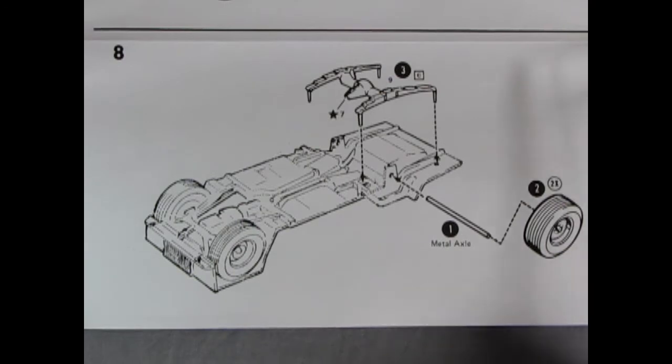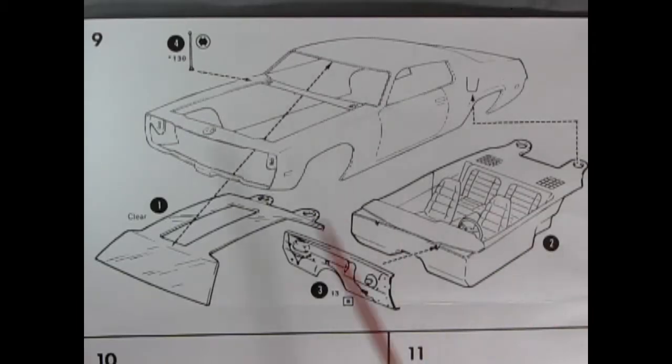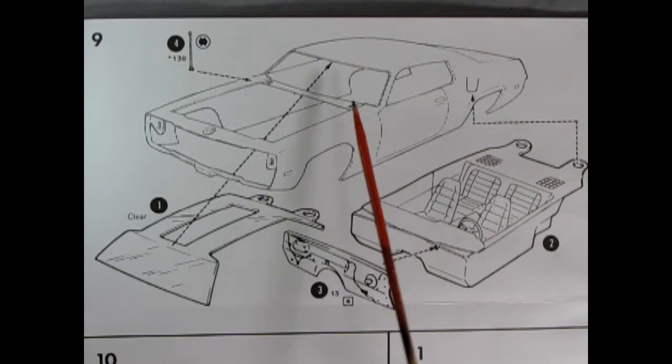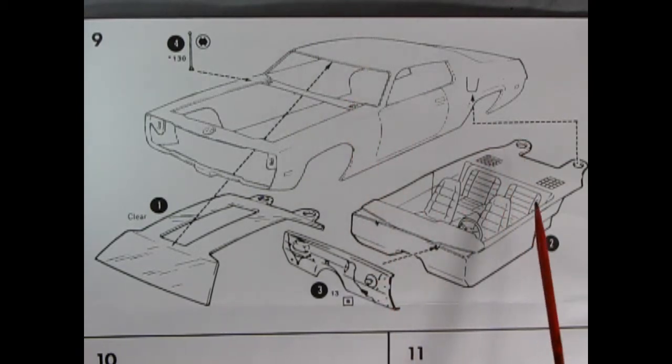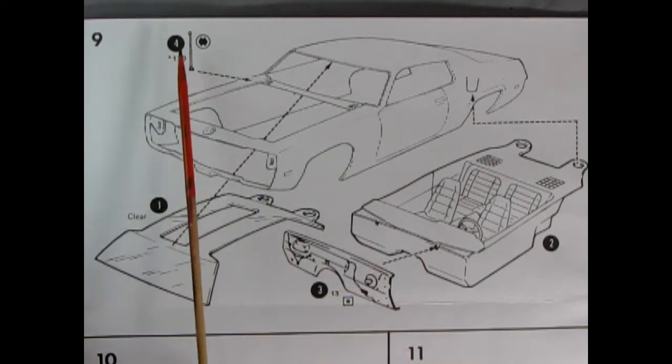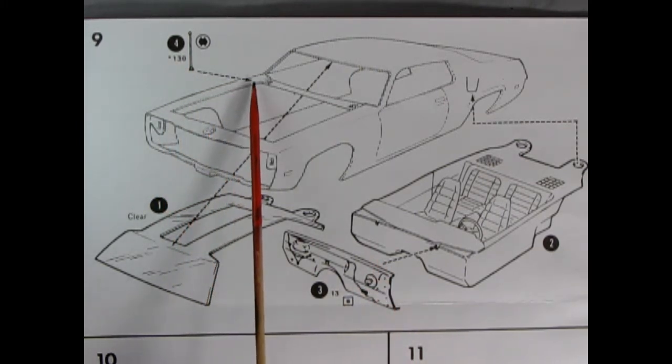Step eight shows the final assembly on our chassis with our differential and springs being dropped into place. The metal axle slips through these locators and then our wheels go onto the back. Step nine shows our body and interior assembly starting with our clear windows which glue up into the body shell followed by our interior bucket and then our firewall and to finish it all off this nice little antenna goes toward the back end of the fenders.